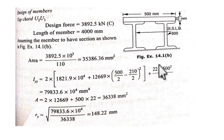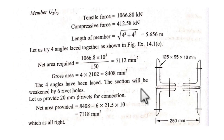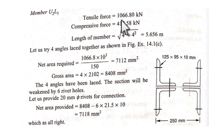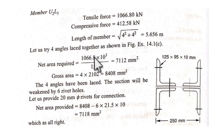Another point: here we have designed using the WSM method, but students familiar with the limit state method can use that as well. In bridges, WSM is standard. Now for diagonal member U2L3 — a diagonal member carries both tensile and compressive forces, so you must check it as both a compression and a tension member. The panel spacing was 4 m and height was 4 m, so the diagonal member length is √(4² + 4²) = 5.65 m.